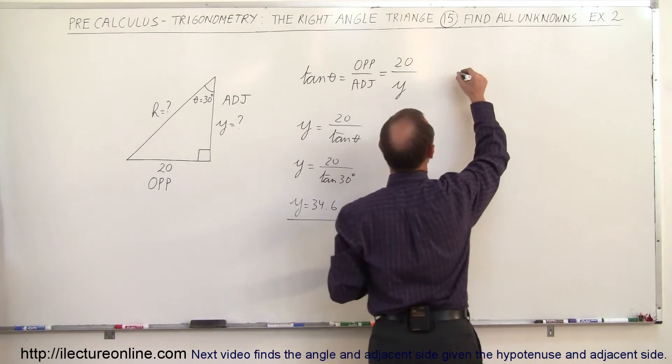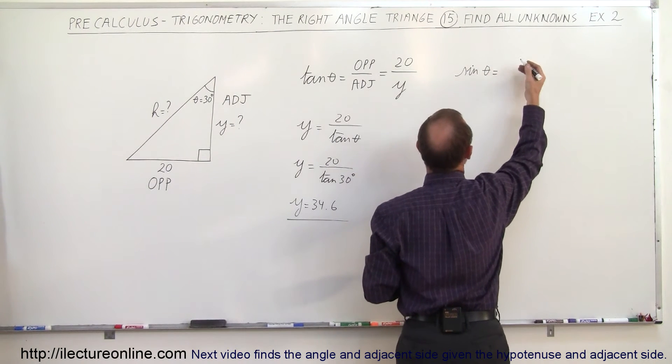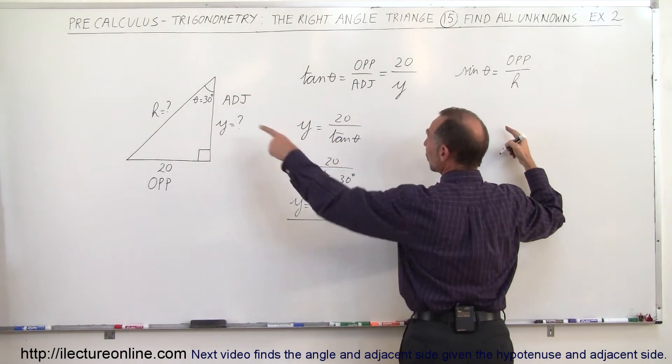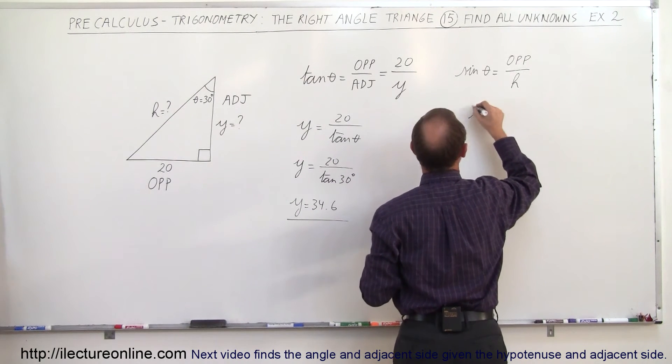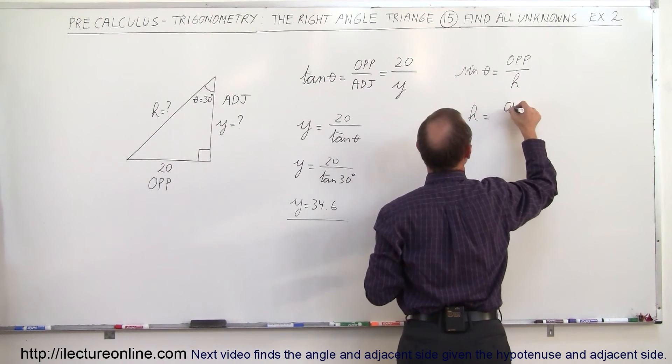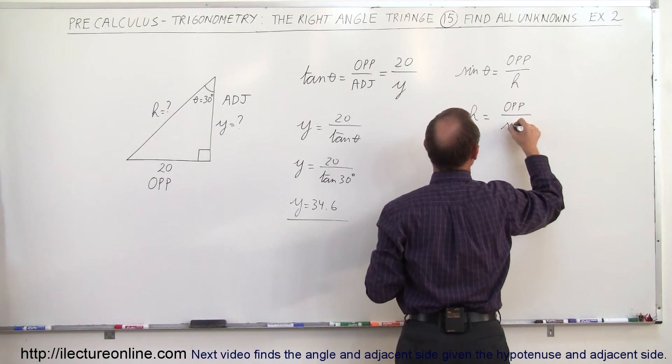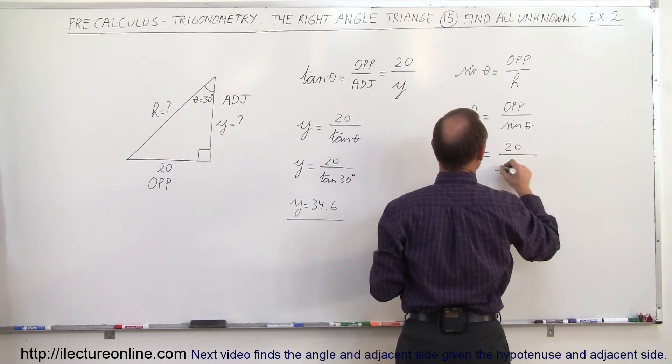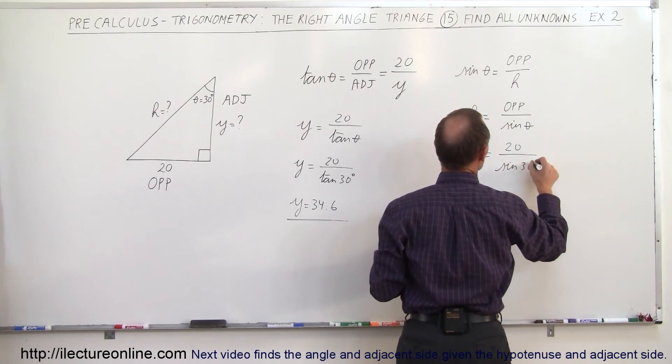We can say that the sine of theta, by definition, is the ratio of the opposite side divided by the hypotenuse. Since we're looking for the hypotenuse, we can say that H is equal to the opposite side divided by the sine of theta. Then we plug in the numbers that we know, opposite side is 20, and we take the sine of 30 degrees.